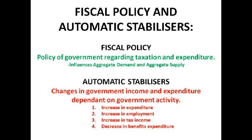Automatic stabilizers are basically changes in government income and expenditure that are dependent on government activity itself. For example, if the government increased its expenditure as part of expansionary fiscal policy, that would lead to an increase in employment — providing more jobs in the public sector — and that would lead to an increase in tax income and a decrease in benefits expenditure, because there'll be more people employed, paying income tax, and less people claiming benefits.